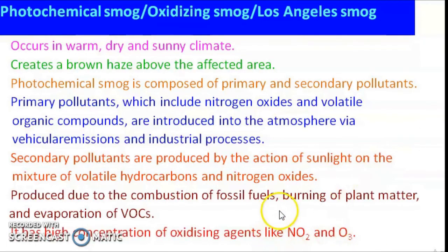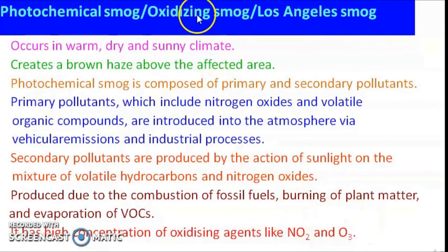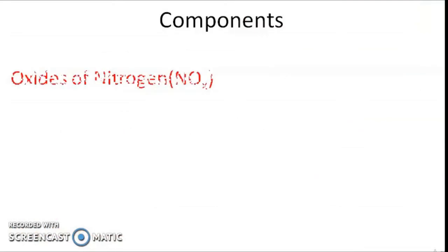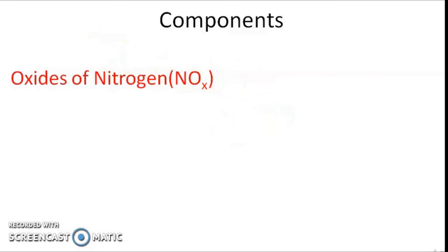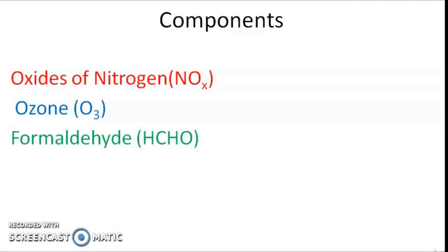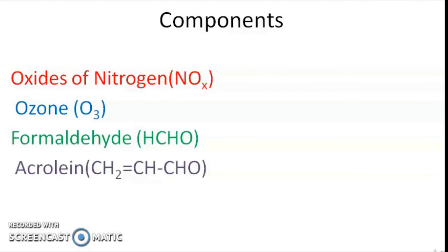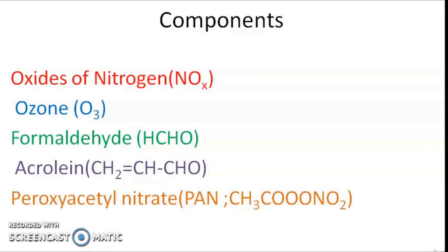Photochemical smog has a high concentration of nitrogen dioxide and ozone, which are oxidizing in nature — that's why we call it oxidizing smog. The major components of photochemical smog include oxides of nitrogen (NOx) such as NO, NO2, NO3, N2O5, ozone, formaldehyde, acrolein, and peroxyacetyl nitrate (PAN).